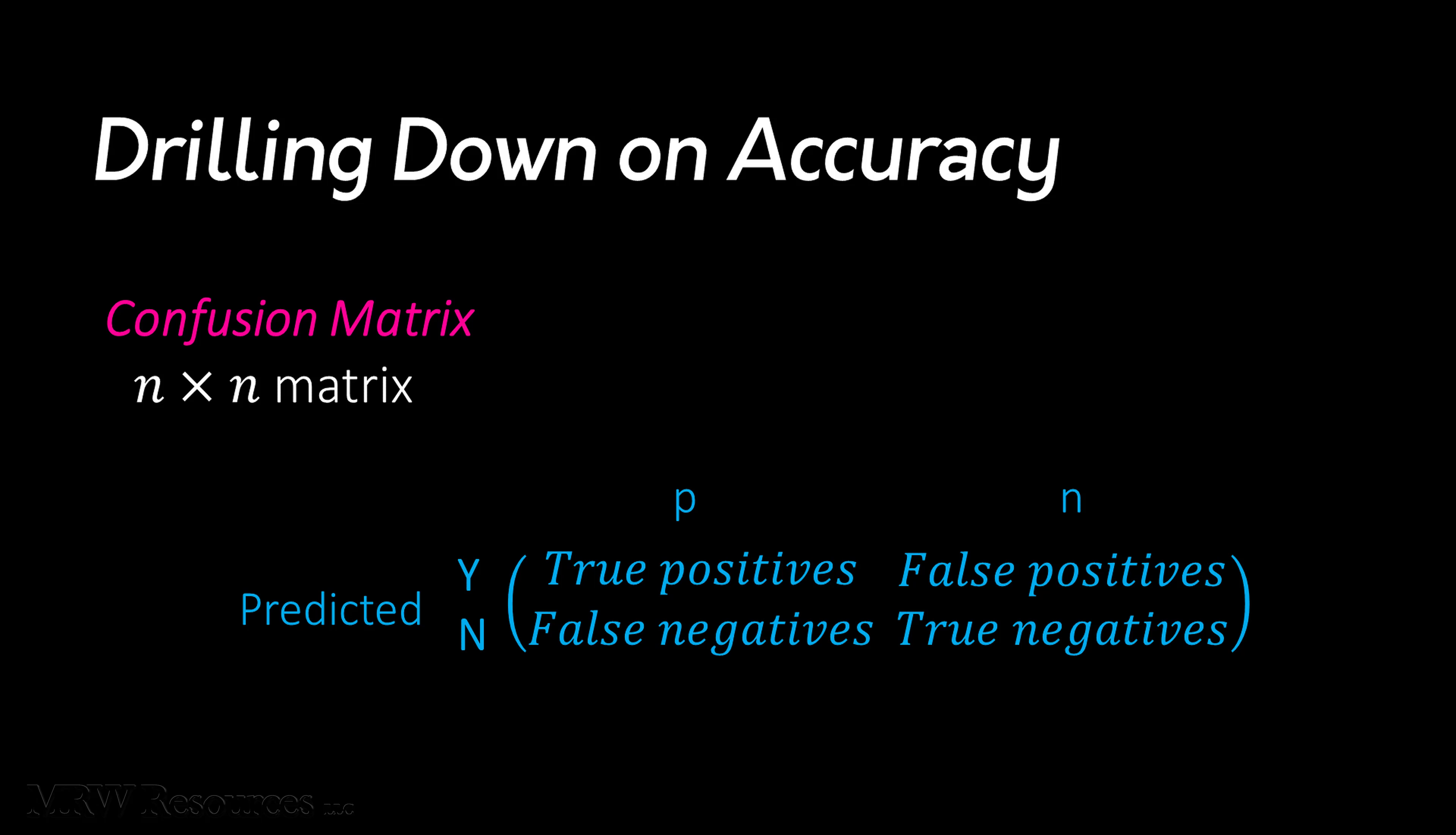The confusion matrix separates out the decisions made by the classifier. The actual true classes, positive or negative, are across the top as column headers. Predicted classes, yes or no, as row headers. The main diagonal contains our count of correct decisions, true positives and true negatives.